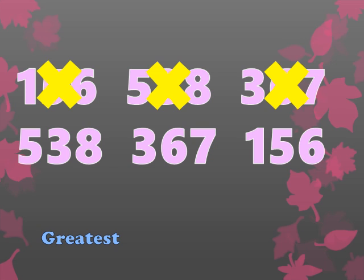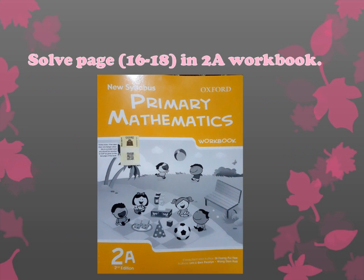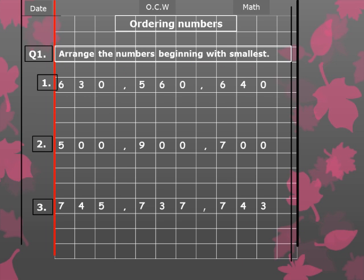This is your home task: solve pages 16 to 18 in your two-way workbook. Your assessment will be based on this work. Do this work in your neat notebooks — first draw a margin line, then mention the date and the topic, which is ordering numbers. Question one: arrange the numbers beginning with the smallest — there are three parts. Question two: arrange the numbers beginning with the greatest — again three parts. That's enough for today, thank you.